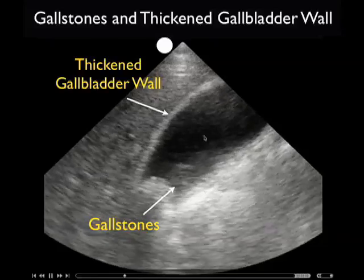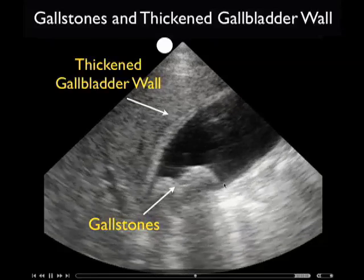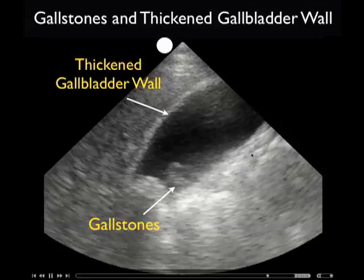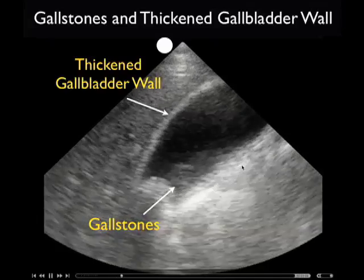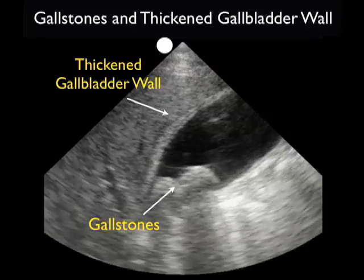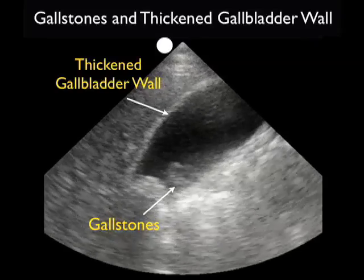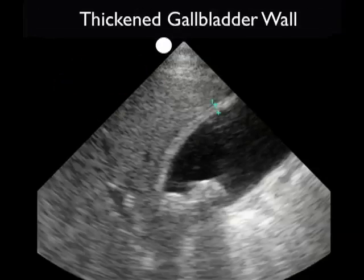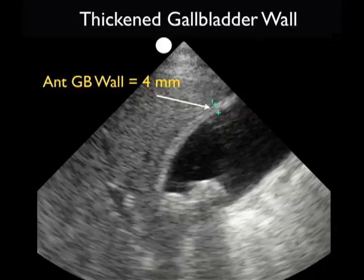Notice that it appears thickened. Here I'm just indicating the posterior wall of the gallbladder, and notice that it's difficult to measure the posterior wall due to an artifact known as posterior acoustic enhancement. The sound waves race through the gallbladder, making it difficult to measure that posterior wall as it lights up. Here we're going to put calipers down on the anterior gallbladder wall, and notice that we have a measurement of four millimeters, indicative of a thickened gallbladder wall as we defined prior — greater than three millimeters in width.